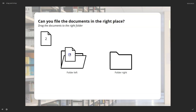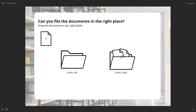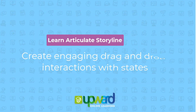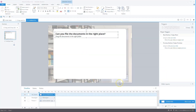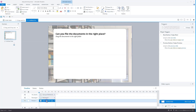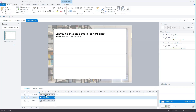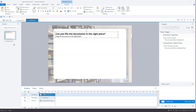In today's video, I'll show you step-by-step how you can create a more engaging drag-and-drop interaction in Articulate Storyline with states. Here's my Storyline project — I already did some preparations. You'll see a background photo, a rectangle, and question text: 'Can you file the documents in the right place? Drag the documents to the right folder.' We're going to create a drag-and-drop interaction where you must drag documents to a folder. Now let's start.